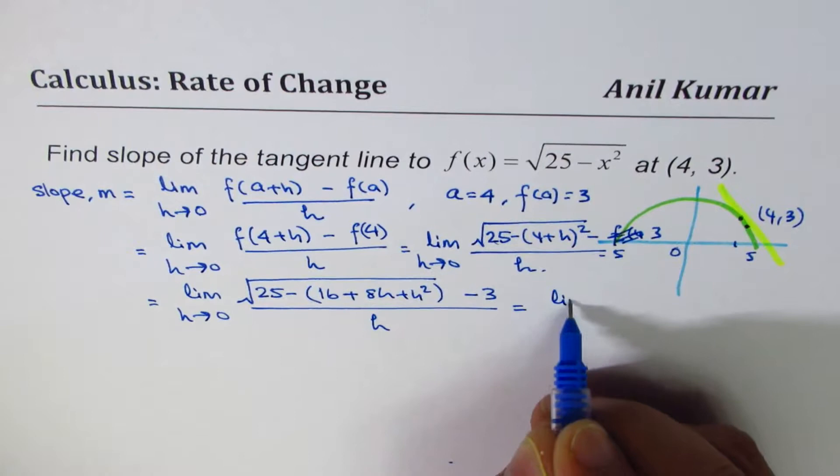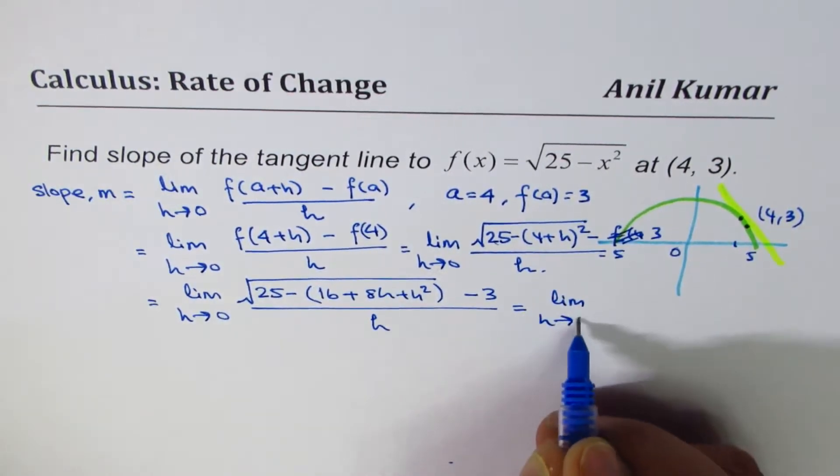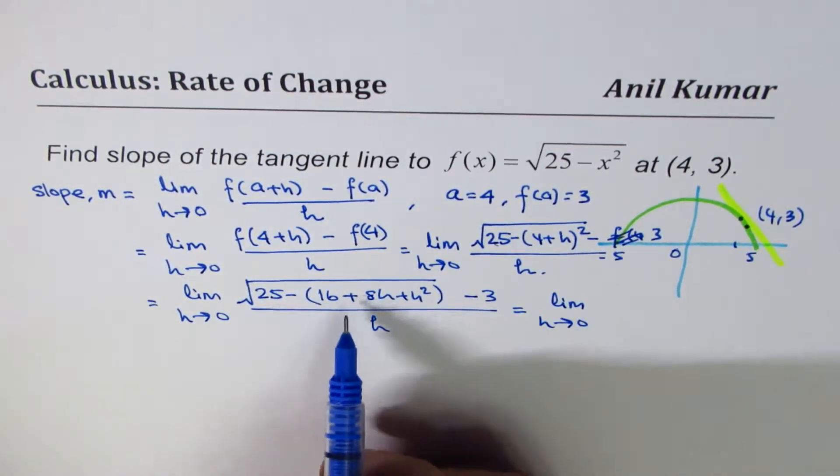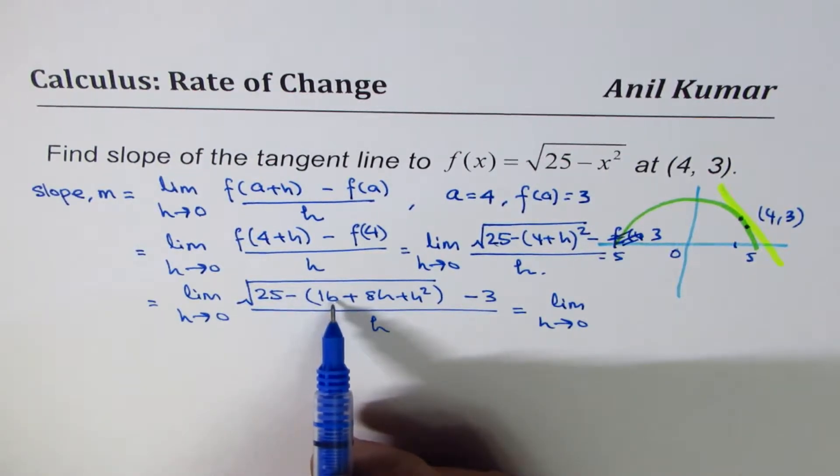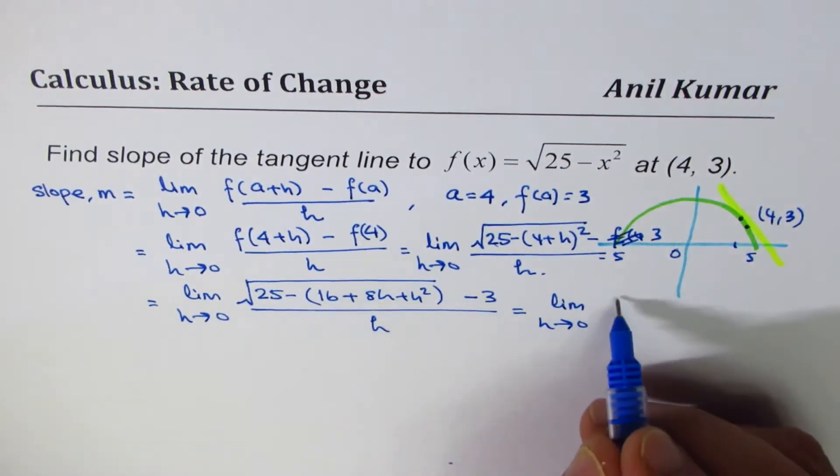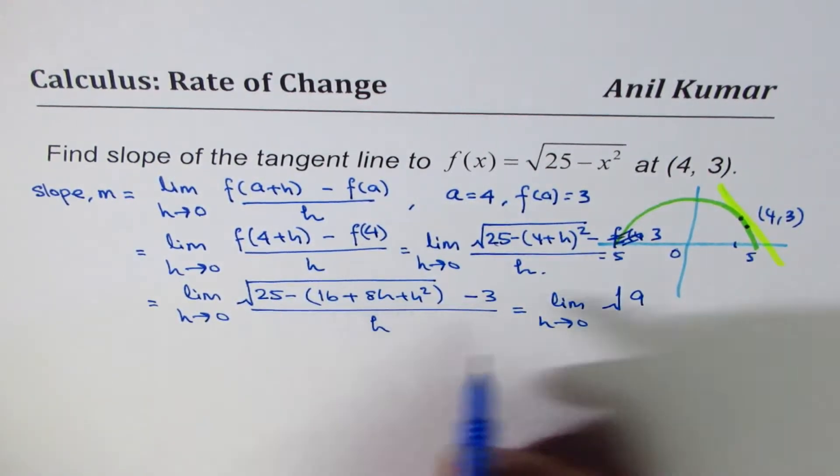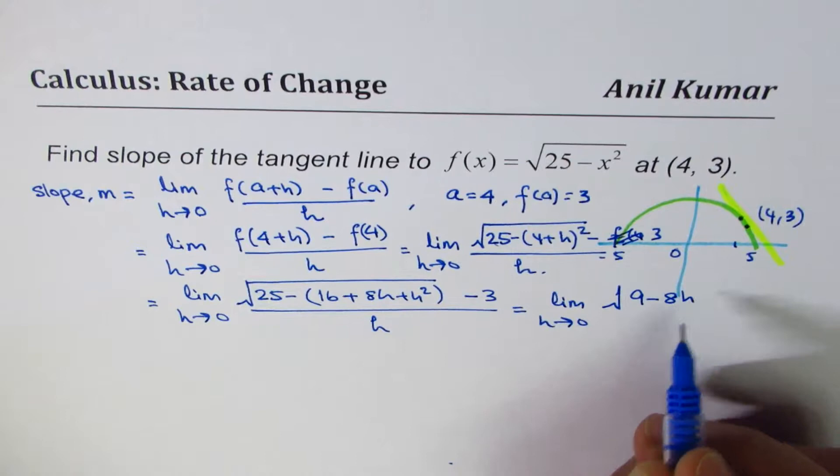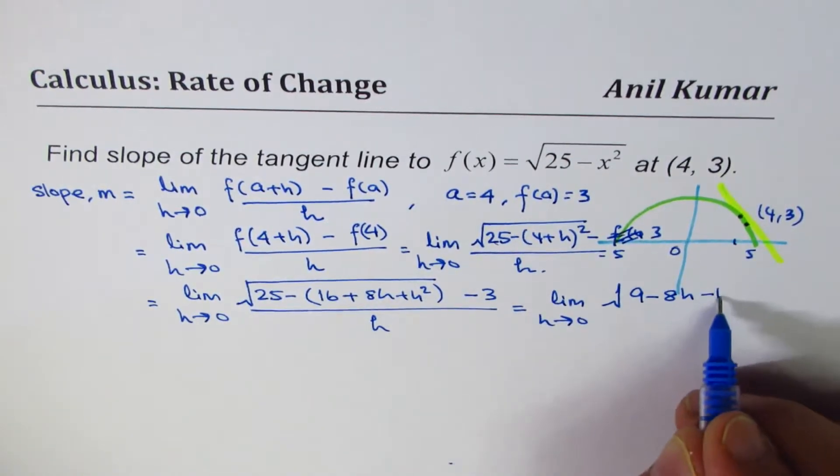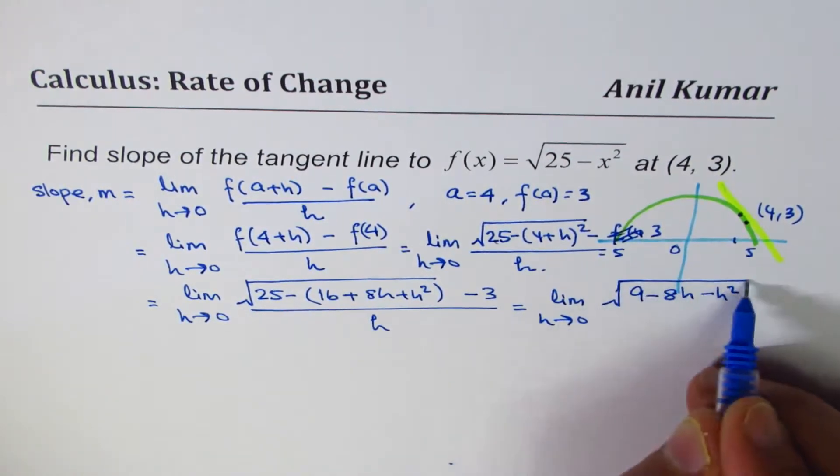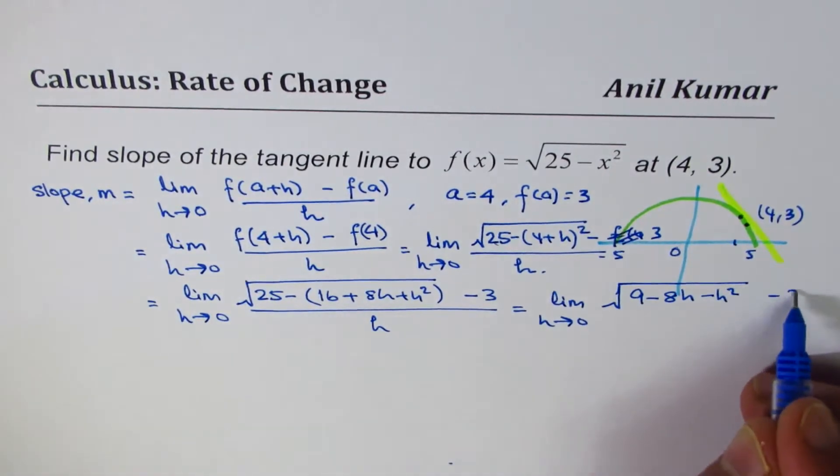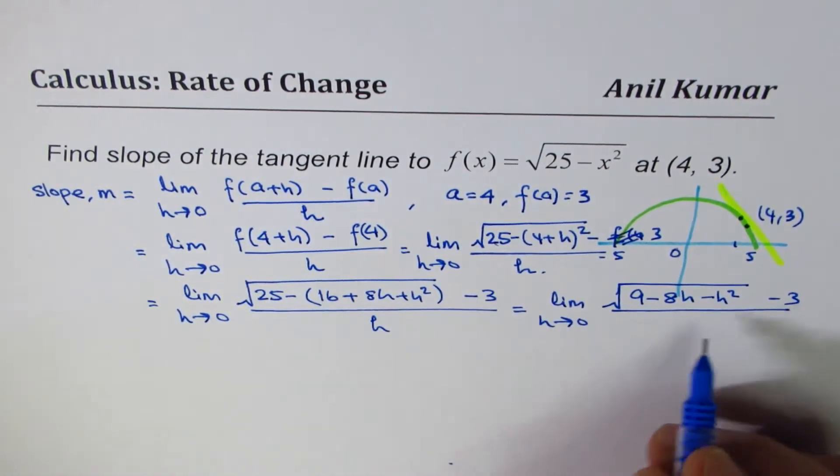which is limit, h approaches 0. If you open the bracket, 25 minus 16 is 9. So we could write this as square root of 9 minus 8h minus h square, minus 3 divided by h.